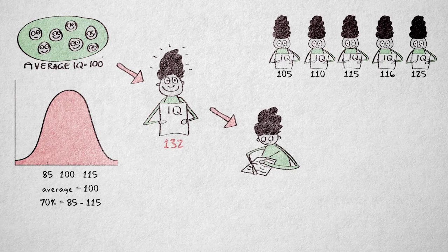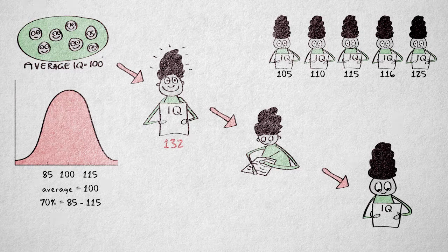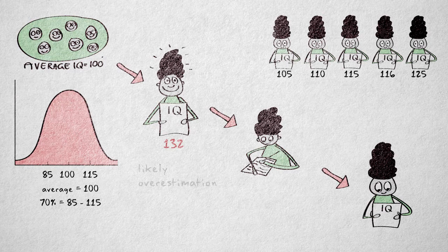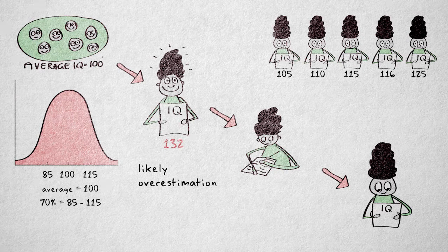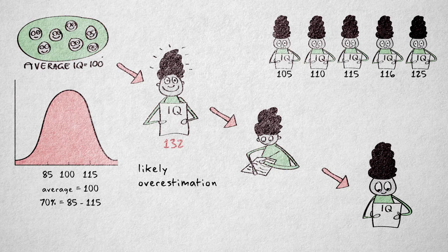Well, because such a high score is very uncommon, it's more likely that the score of 132 is an overestimation of someone's real intelligence. The next score for this person will probably be lower.